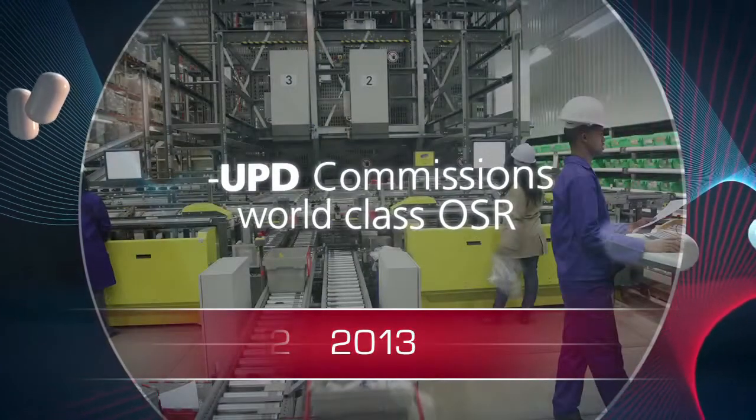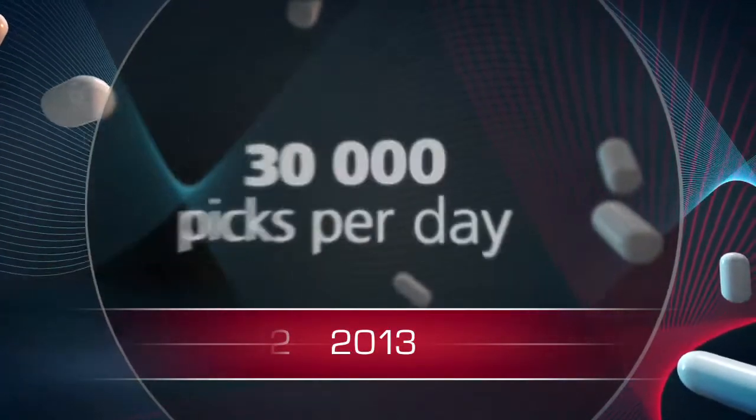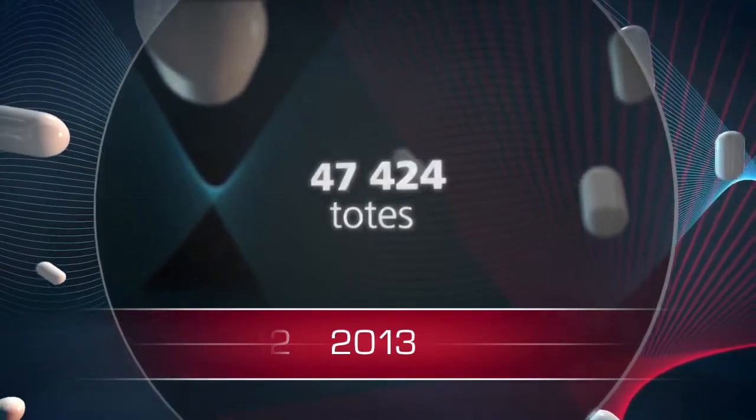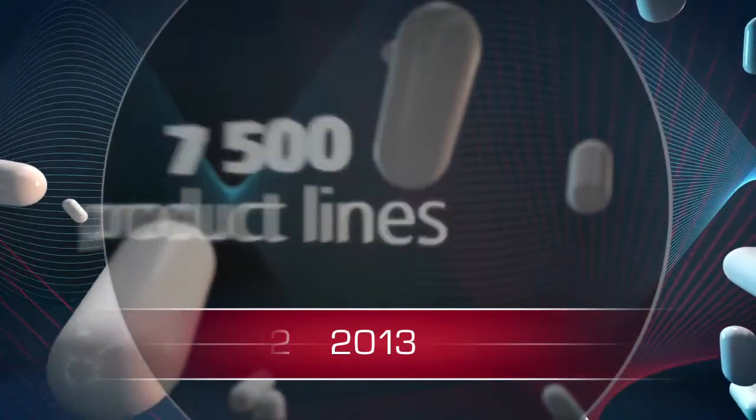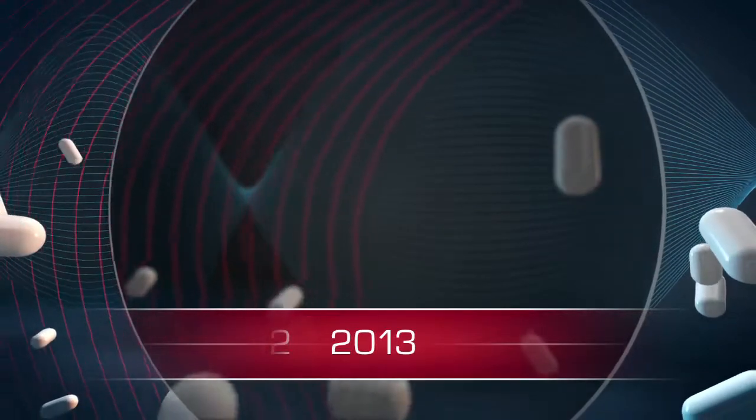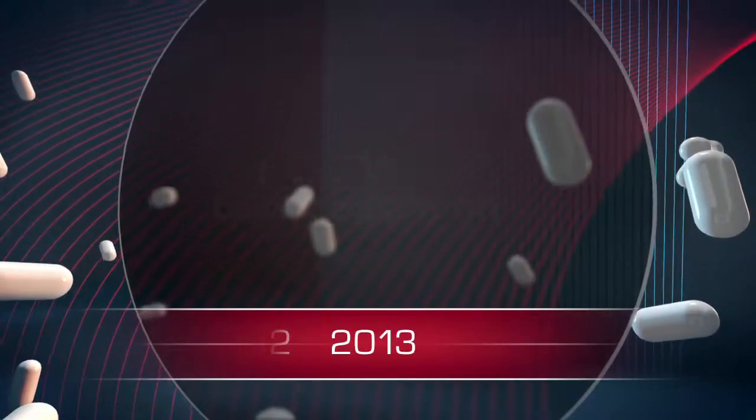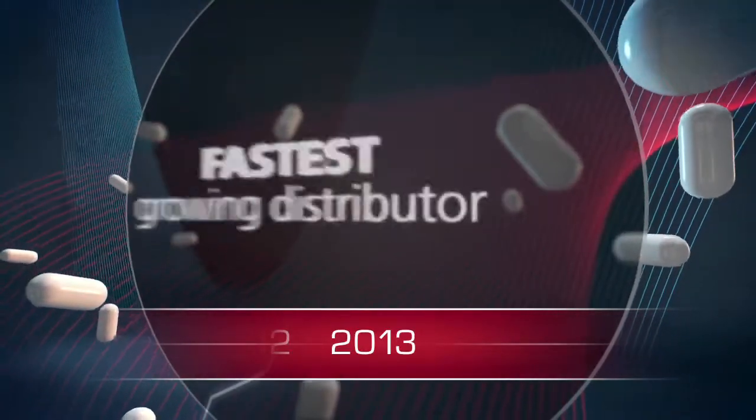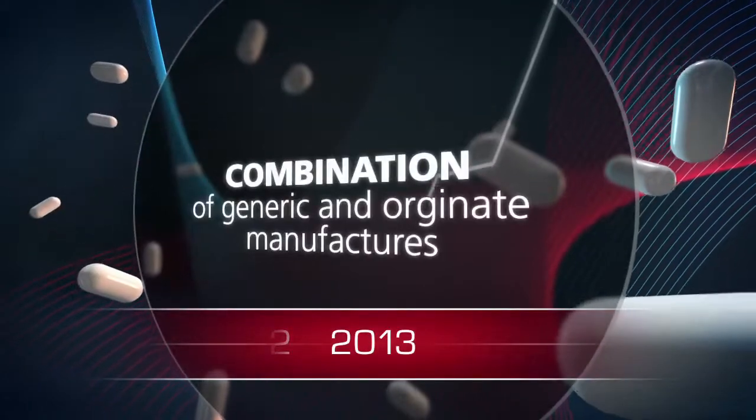And in 2013, UPD commissions the world-class OSR automated picking machine, which allows 30,000 picks per day, accommodates 47,424 totes containing various products for picking, and accommodates 7,500 product lines into the machine. 2013 also marked the building expansion of the Lee Glenn facility, increasing distribution capacity by 60%.